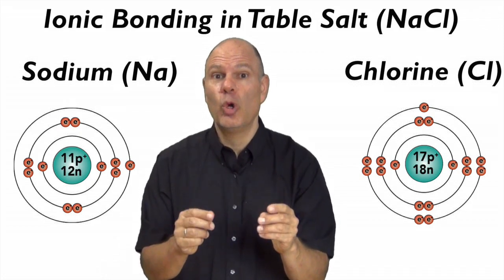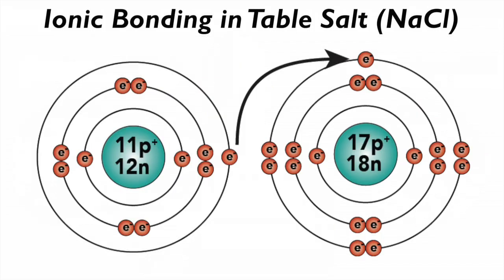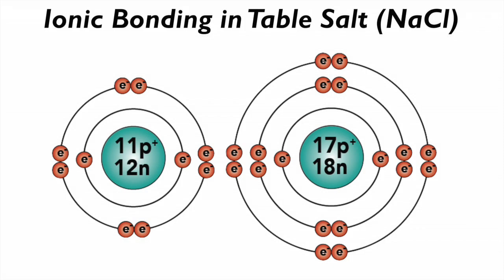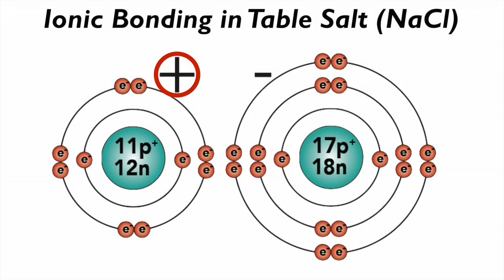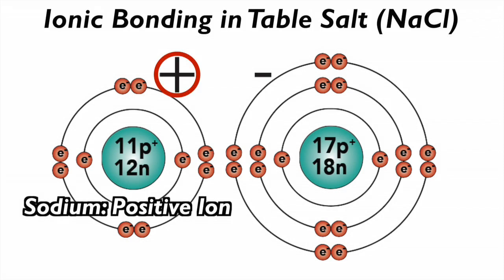Here's how they interact to form sodium chloride, or table salt. First, sodium gives up its outer electron to chlorine. As a result, both sodium and chlorine have complete outer orbitals. Note that sodium has lost its outermost third electron orbital. This trade transforms both sodium and chlorine. Sodium, because it lost an electron, now has 10 electrons and 11 protons. Because it has one more positive charge than negative charge, its overall charge is positive. The name for a charged particle like this in chemistry is ion, and sodium is now a positively charged ion.